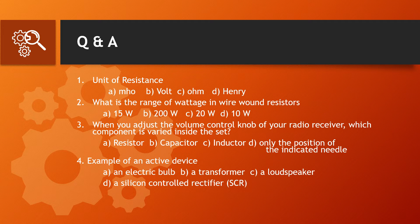Next, question number 3: When you adjust the volume control knob of your radio receiver, which component is varied inside this set? The options are Option A resistor, Option B capacitor, Option C inductor, and Option D only the position of the indicated needle. The correct answer is Option A, resistor. When adjusting volume, we use a resistor.